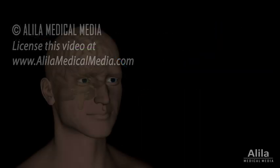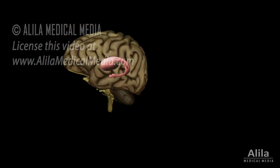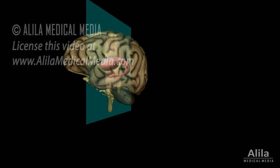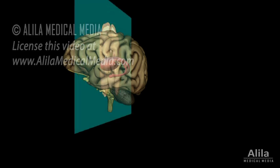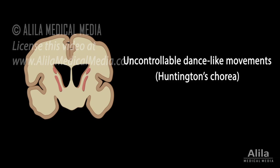The resulting neuronal cell death is most prominent in the basal ganglia of the brain, especially in the striatum. Because the striatum's function in motor control is to inhibit unwanted movements, its degeneration results in uncontrollable dance-like movements, known as Huntington's chorea.